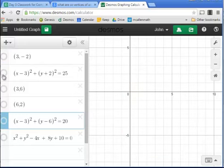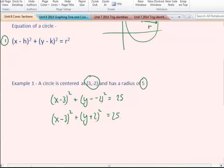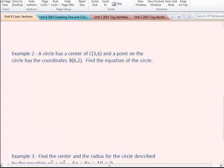In our next problem, we have a center point at 3, 6, and I'll just draw that. So, we go 3 units to the right, go up 6, and we're at 3, 6, and we have a point on the circle.